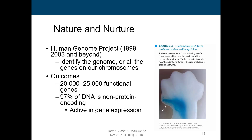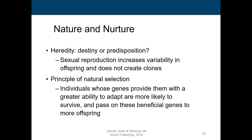You might ask yourself: is what you inherit from your family, from your parents, destiny? Or is it just a predisposition? When you have a child, it does not create a little clone of you. It does increase genetic variability, and there are a lot of possible combinations when you talk about genes combining. If you think back to Charles Darwin and natural selection, individuals whose genes provide them with a greater ability to adapt are more likely to survive and pass on their genes — that's survival of the fittest.